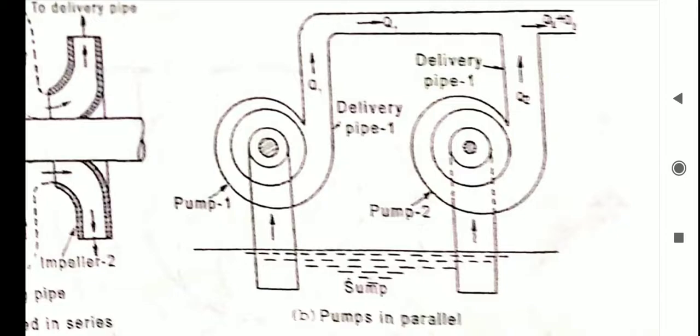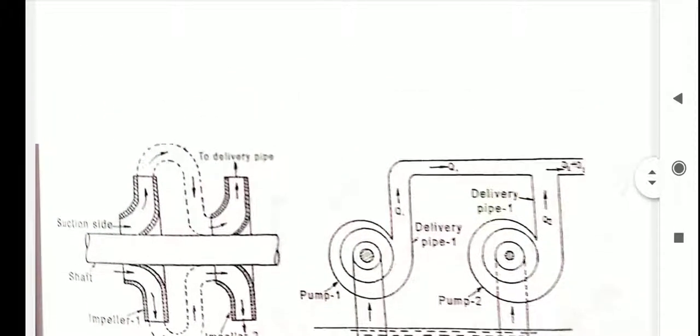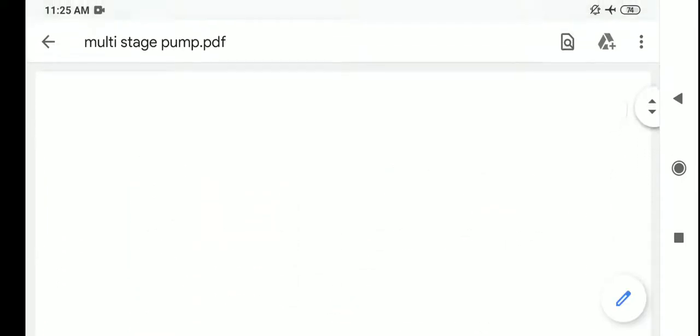For identical pumps working under the same head, the discharge will be the sum of the flow rates of each pump. If the number of identical impellers each delivers the same flow rate which works under the same head, then the total discharge from the multi-stage pump is given by total discharge qt equals n into q. This is about pumps connected in parallel and pumps connected in series. This is about multi-stage pumps. Thank you.